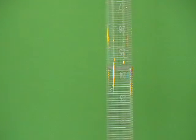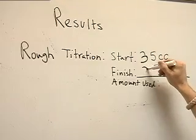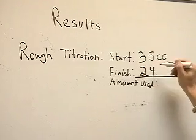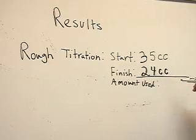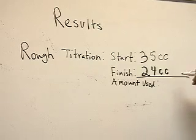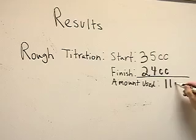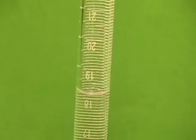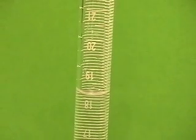After your titration is over, you want to make sure to note how much acid is left in the burette. We record 24 cubic centimeters for this neutralization, meaning 11 cubic centimeters were used for this rough titration. A rough titration just means we are trying to get a sense of how much acid is necessary to neutralize our unknown base.